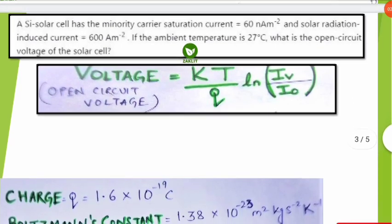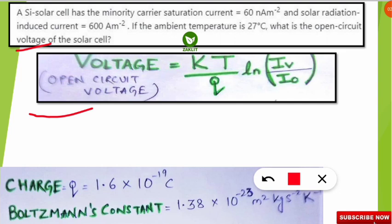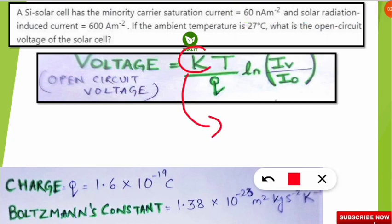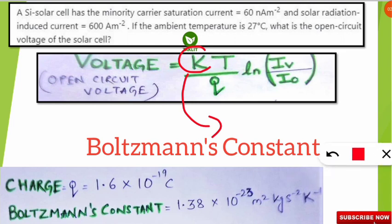The formula to find the open circuit voltage of the solar cell is: V_oc = (K × T / q) × ln(I_v / I₀). Here, K is the Boltzmann's constant, whose value you must remember: 1.38 × 10 to the power minus 23 meter squared kilogram per second squared per Kelvin.